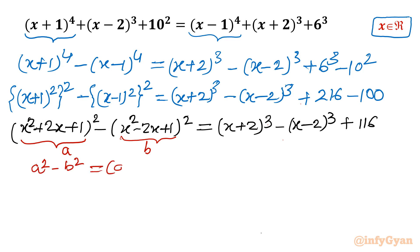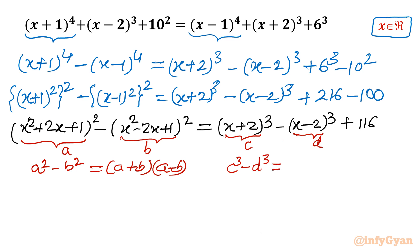So I will write (a+b)(a-b) instead. Coming to the right hand side, if I consider (x+2) as 'c' and (x-2) as 'd', then it is a c³-d³ formula, same as a³-b³. So I will write (c-d) times (c²+cd+d²). Let us apply the identities.